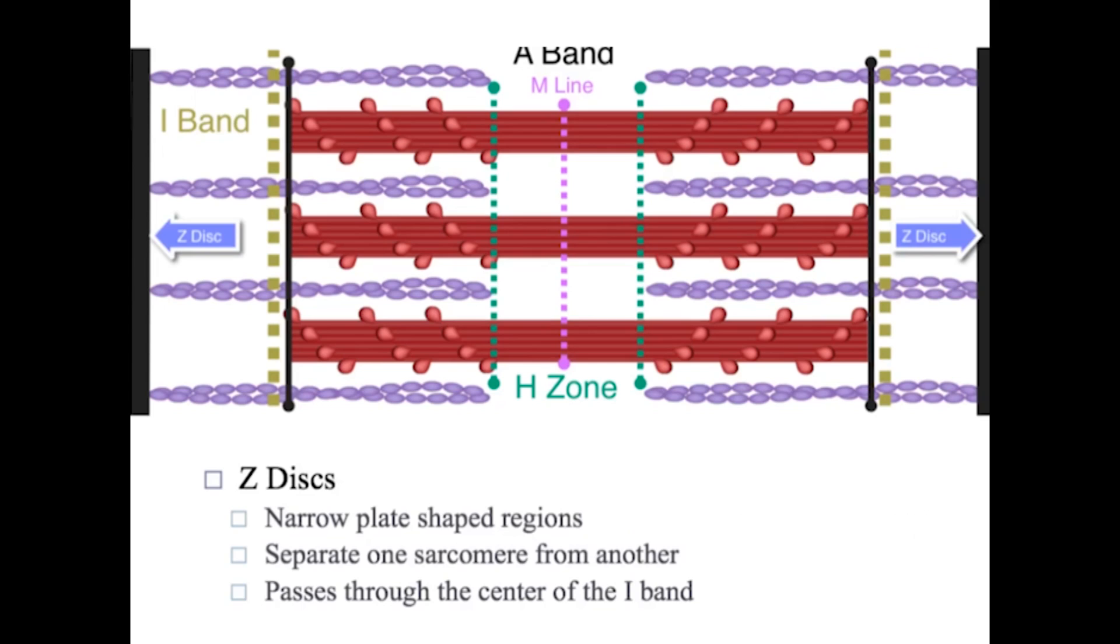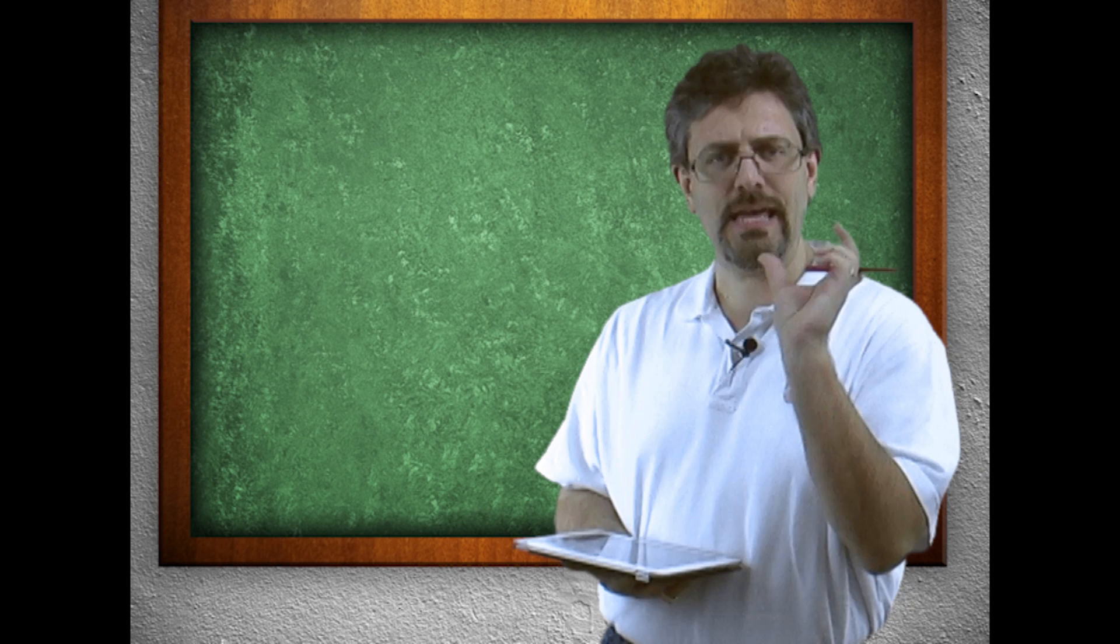And our last component is going to be the Z disk. The Z disk were actually those posts from early on in the slides. Those are where the sarcomere begins and ends. The Z to Z is a sarcomere.